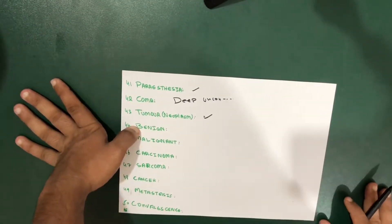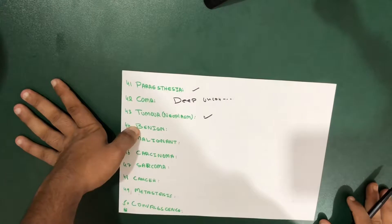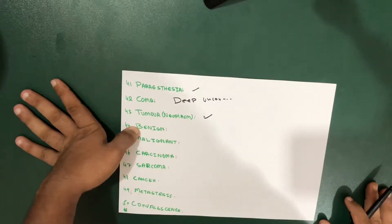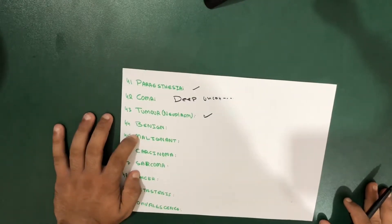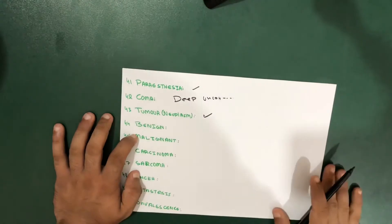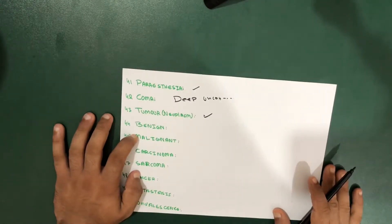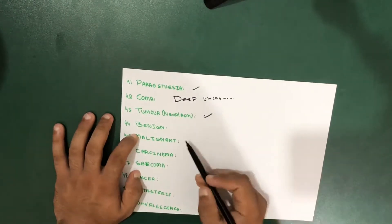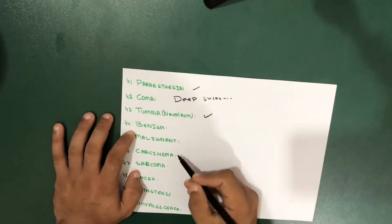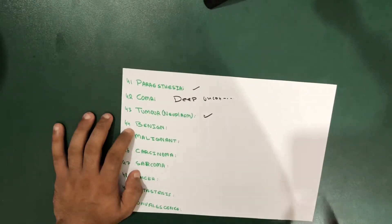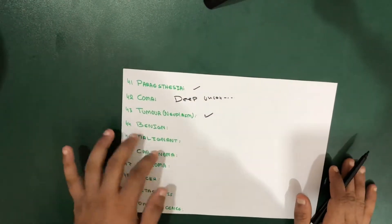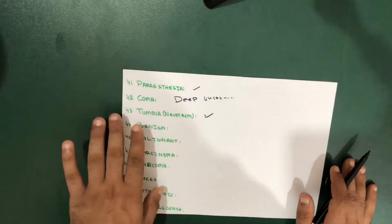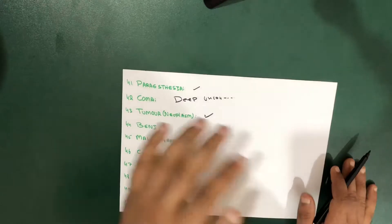In the case of benign — you must have heard of benign and malignant. Benign is a mild illness or growth which does not endanger life, so benign is comparatively positive. Malignant is a severe form of illness or growth which is resistant to treatment. It's kind of cancer. A malignant tumor is harder to handle than a benign tumor.